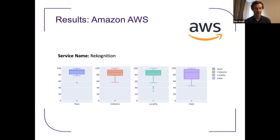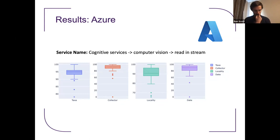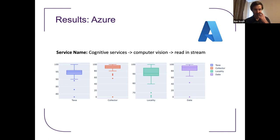Next up is Azure. They provide an API under their cognitive services computer vision called Reading Stream, which can be used for handwritten and typewritten text extraction. As you can see, really quite good results — improving on accuracy for collector and date. This was a bit of a dark horse; it's not really the first cloud AI provider I would select for something like this. But the really impressive results show how important document processing is for text extraction.